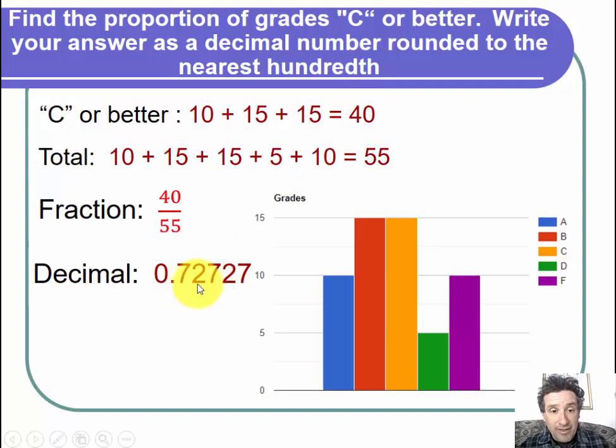But we don't want to go on forever. We want to round to the nearest hundredth. So the hundredth place is right here, this first 2. And we notice that to the right of that 2 is a 7. 7 is at least as large as 5, so that means we round the 2 up. And then the final answer for this part is 0.73 as a decimal number for the proportion of grades C or better.